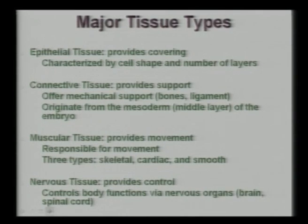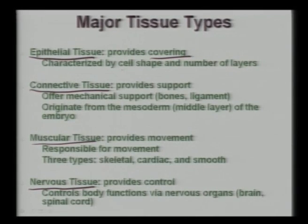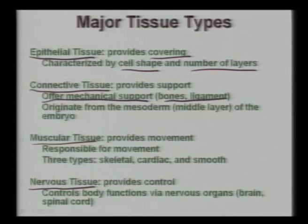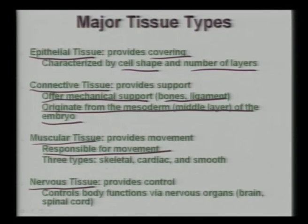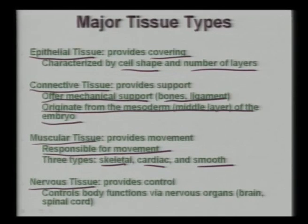Major tissue types: epithelial tissue provides covering and is characterized by cell shape and number of layers; connective tissue provides structural support — such as bones and ligaments — and originates from the mesoderm; muscular tissue is responsible for movement (skeletal, cardiac, or smooth muscle); nervous tissue provides control of body functions. Epithelial protects from the outer environment; connective tissue offers mechanical support; nervous tissue controls body movement.